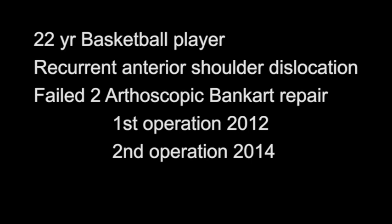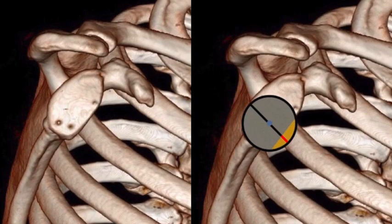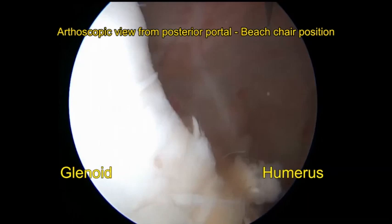Arthroscopic bone grafting for antero-inferior glenoid defect using a template. This video shows arthroscopic iliac bone grafting for antero-inferior glenoid defect using a template in a 22-year-old basketball player with recurrent shoulder dislocation, following failure of arthroscopic Bankart repair twice.